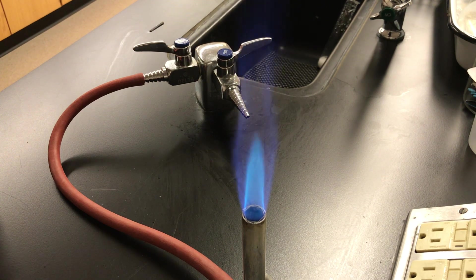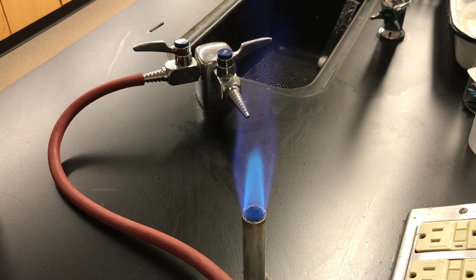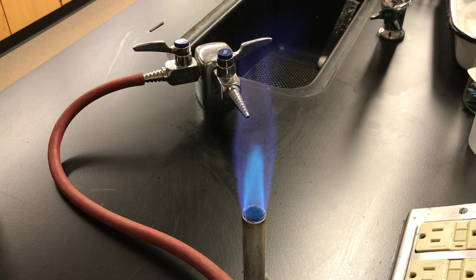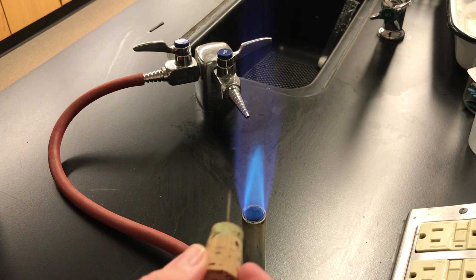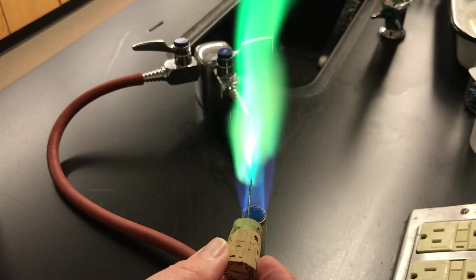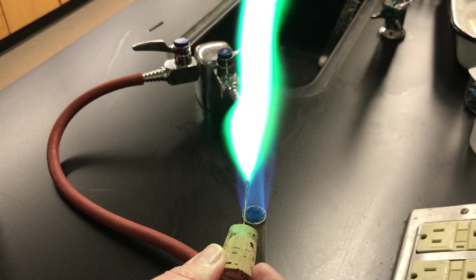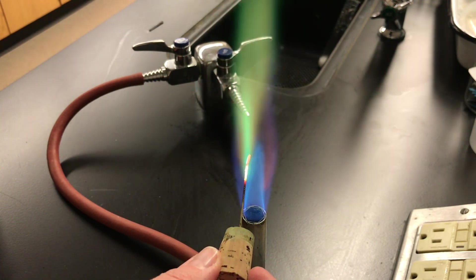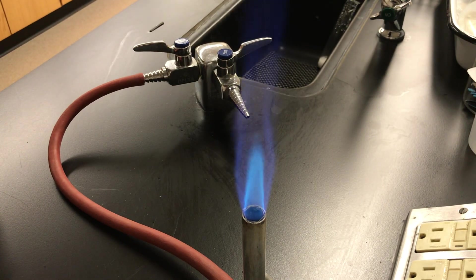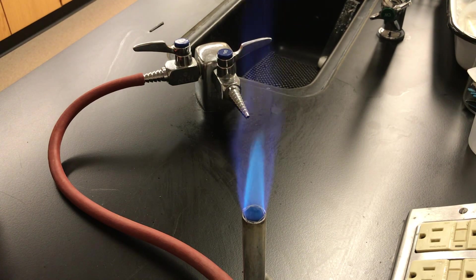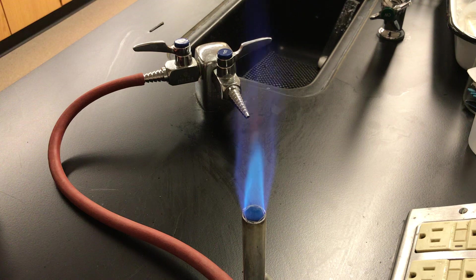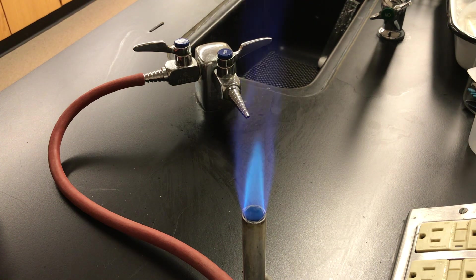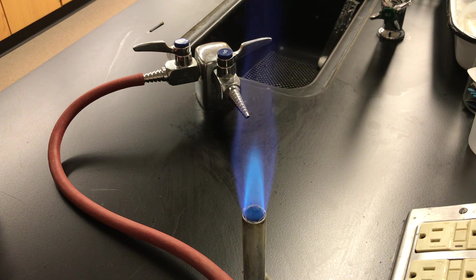And now we'll do one last one. Here's the third unknown. These colors, if you're a grade nine student, are characteristic properties of the elements. So what element that we saw today would be causing that color? If you guessed copper, you were correct. That was a copper flame test.